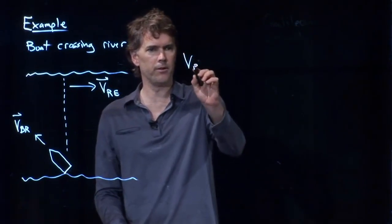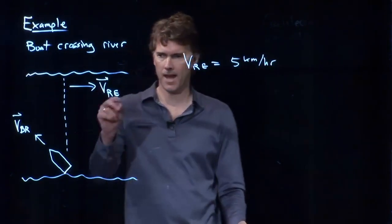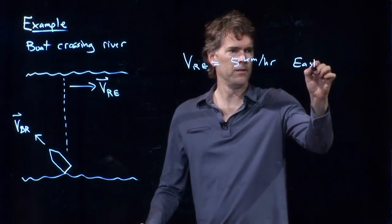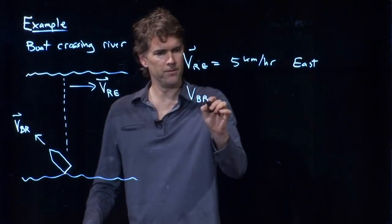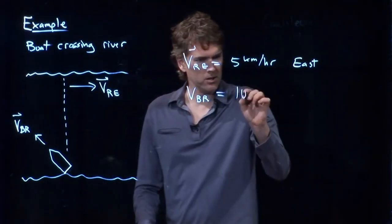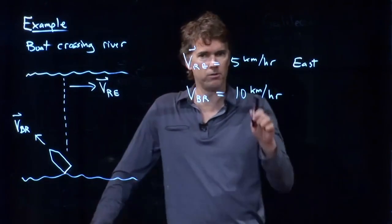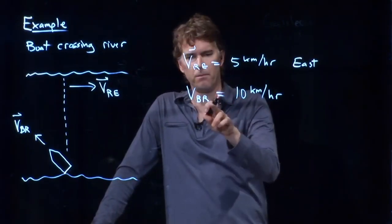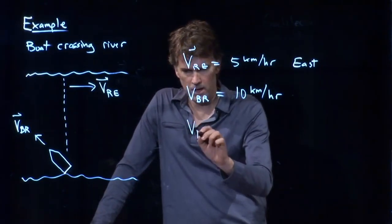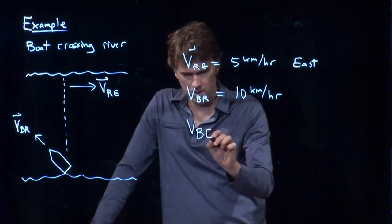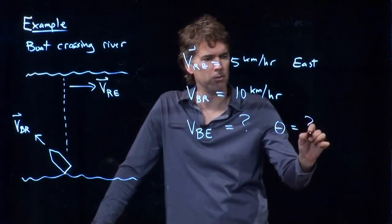Let's say that the speed of the river relative to the Earth is 5 kilometers per hour, and it is heading east. And the velocity of the boat relative to the river, the maximum speed that it can do is 10 kilometers per hour. And we don't know what the angle is yet. So RE means river relative to Earth. BR means boat relative to river. And we want to find what is the speed of the boat relative to the Earth.